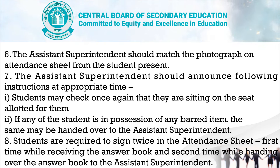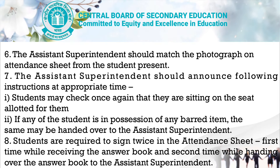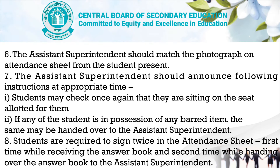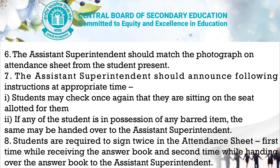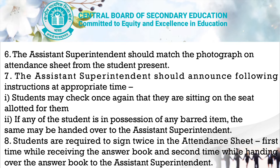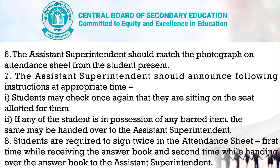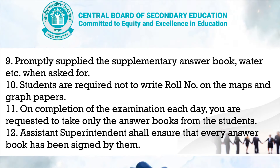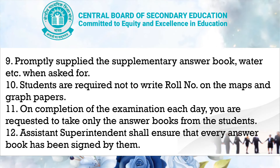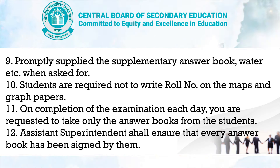First, students may check once again that they are sitting on the seat allotted for them. Second, if any student is in possession of any barred item, the same may be handed over to the assistant superintendent. Eighth, students are required to sign twice in the attendance sheet — first while receiving the answer book, and second while handing over the answer book to the assistant superintendent. Ninth, promptly supply the supplementary answer book, water, etc., when asked for.